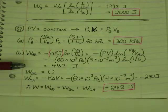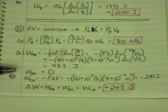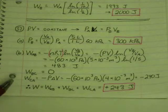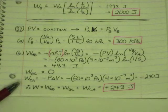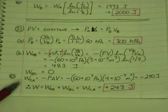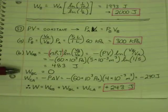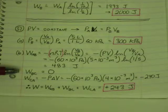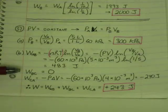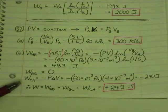The work on path BC, it's isochoric, vertical line, so the work there is 0. Work on path CA. It's isochoric. Work on CA. That one is isobaric.